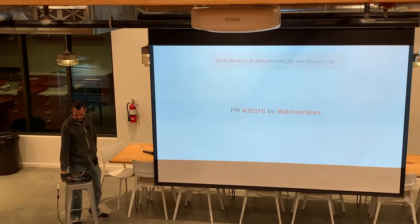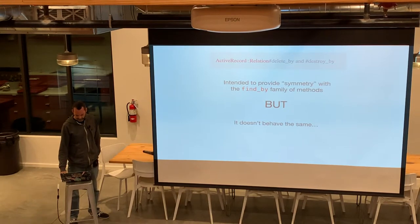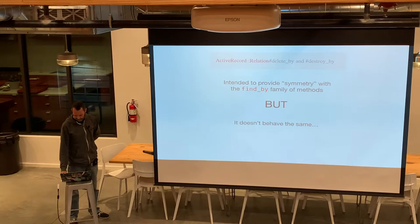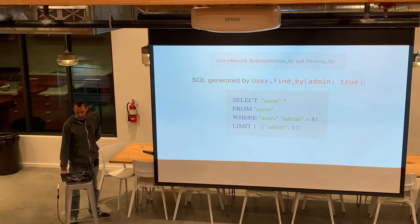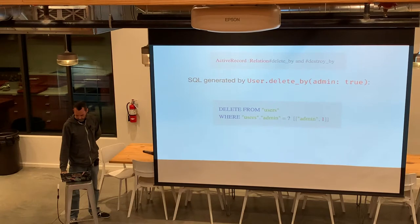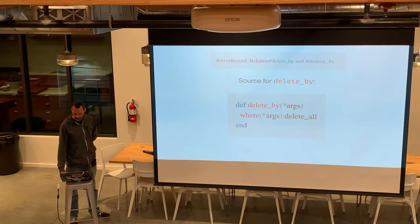Number eight: Active Record delete_by and destroy_by, PR 35316 by Abhay Nikam. These were intended to provide symmetry with the find_by family of methods, but in my opinion it doesn't behave the same. User.find_by(admin: true) selects a user from users where admin is true with limit one — it returns one user. But User.delete_by(admin: true) deletes every user that's an admin. That's something to be aware of. The source code basically just passes the arguments to where and calls delete_all on the result.